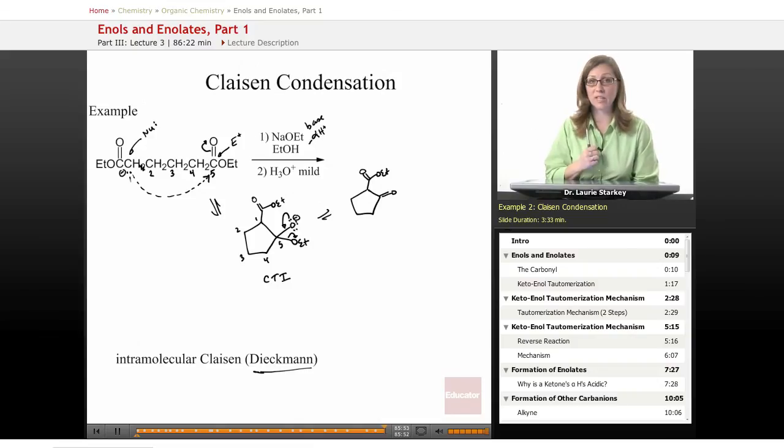Aldol reactions can happen intramolecularly as well to form rings. And a Dieckmann is when we have a diester cyclizing to do an aldol type condensation. So this wraps it up for part one of our enols and enolates discussion. And we'll continue the discussion looking at some different types of species, different types of electrophiles that enols and enolates can react with next. Thanks for visiting educator.com.